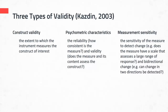Does the measurement have good reliability and good validity? And then finally, measurement sensitivity is the idea that the measurement is sensitive to any change that may occur. For example, if I want to measure community in the online classroom and implement an intervention to affect community, I want to make sure the instrument I choose is sensitive to detecting changes in community after the intervention is done.